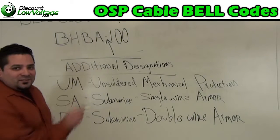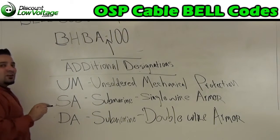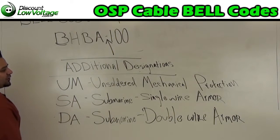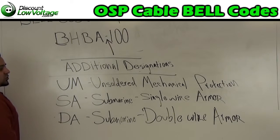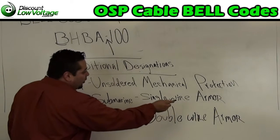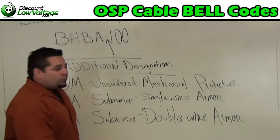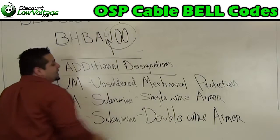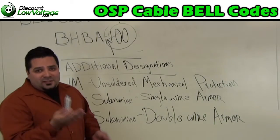You're going to have four designations, but you may have additional designations. That type of cable is not too common. But you're either going to have a UM, which is an unsoldered mechanical protection code, or an SA designation after your fourth letter, which is a submarine single wire armored, or a DA, which is a submarine double wire armored. And don't forget, after your code you have your 100, which designates how many pairs of cable — 25 pair would be 25, 12 would be 12, and so on.